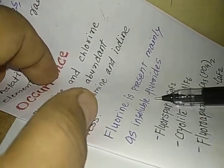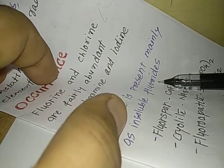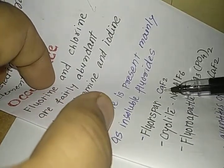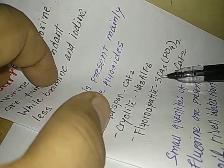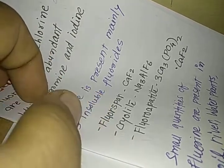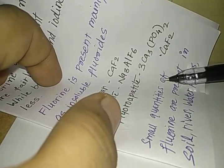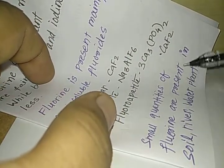Fluorine is present mainly as insoluble fluorides: as fluorspar CaF2, cryolite Na3AlF6, and fluorapatite 3Ca3(PO4)2·CaF2. Please remember, my dear students, if you can, it's better to remember. Small quantities of fluorine are present in the soil, in the river, in the water.